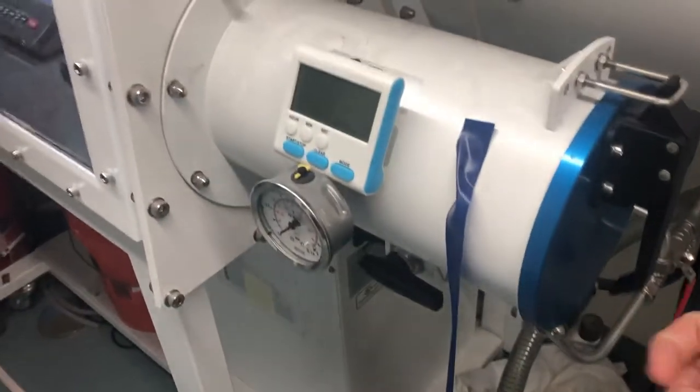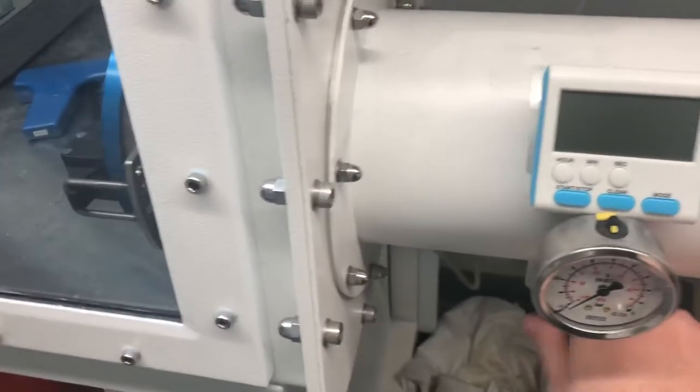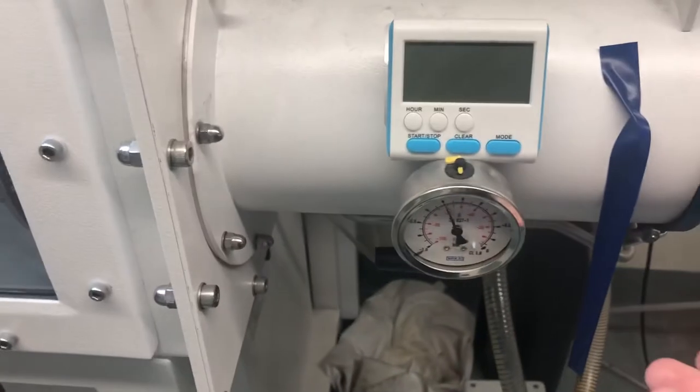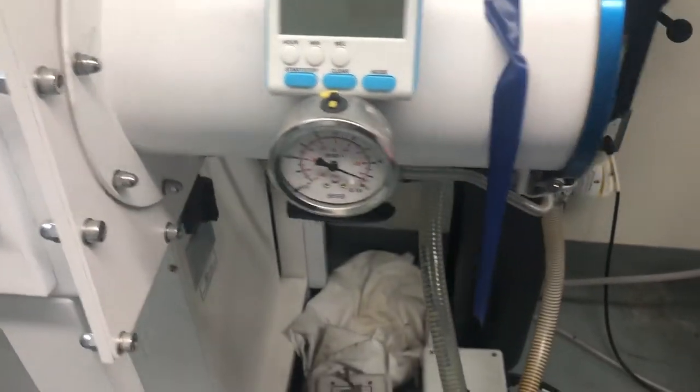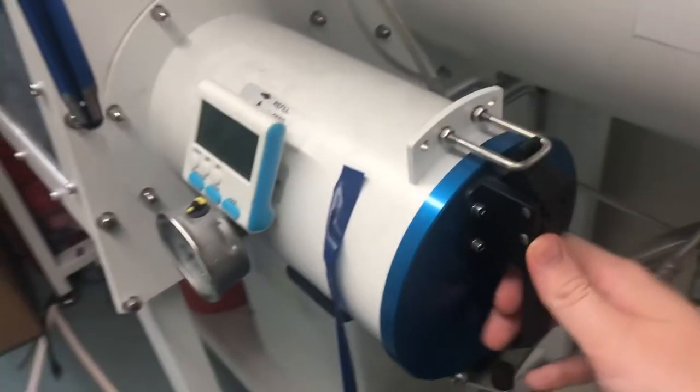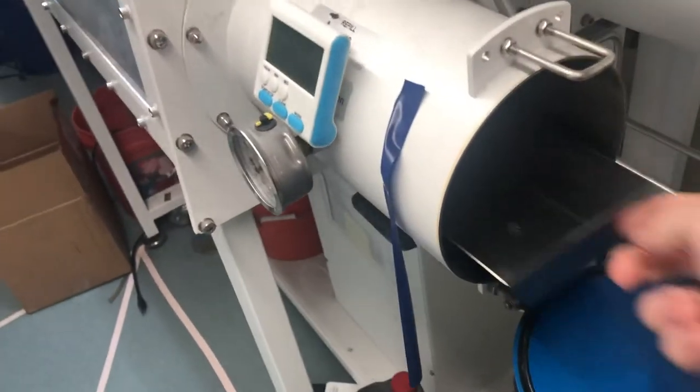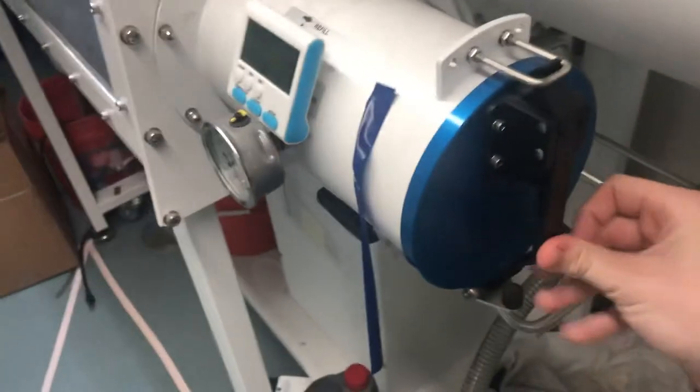You will open the chamber from this side. This will be under argon at this point. You will open the chamber from this side, take your stuff out, immediately shut it quickly, and pull vacuum again.